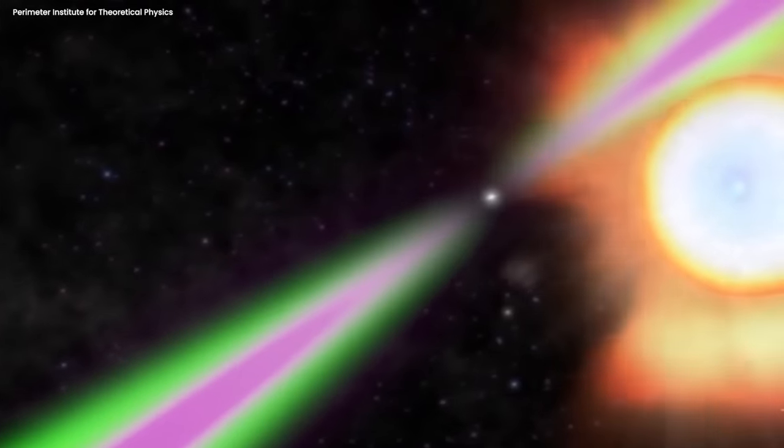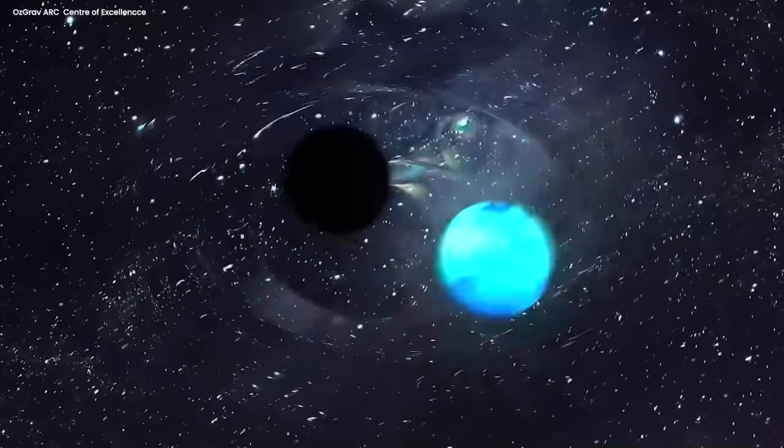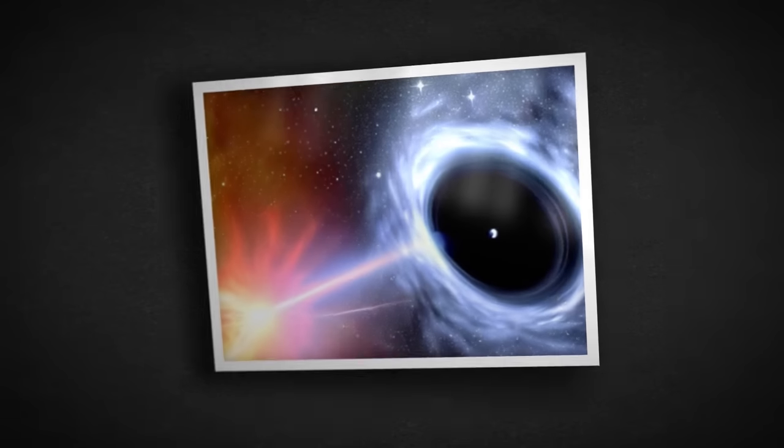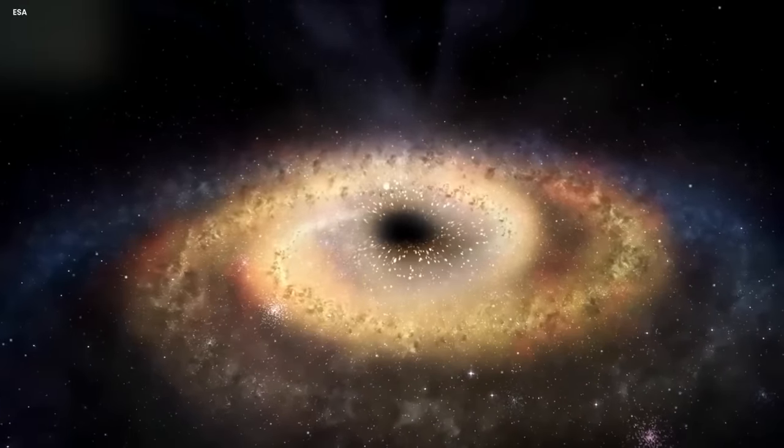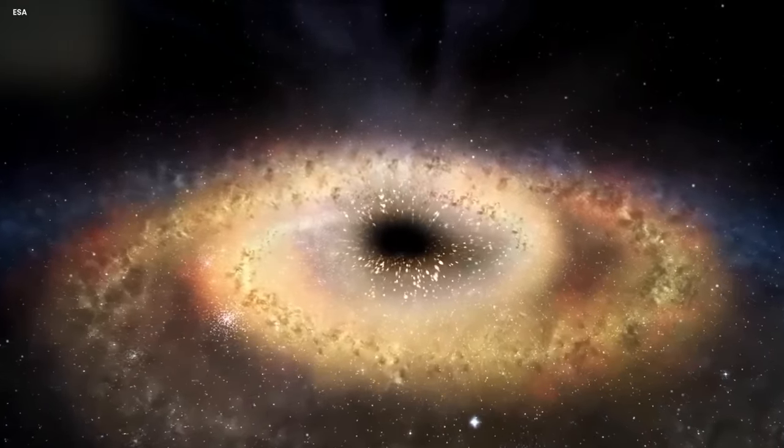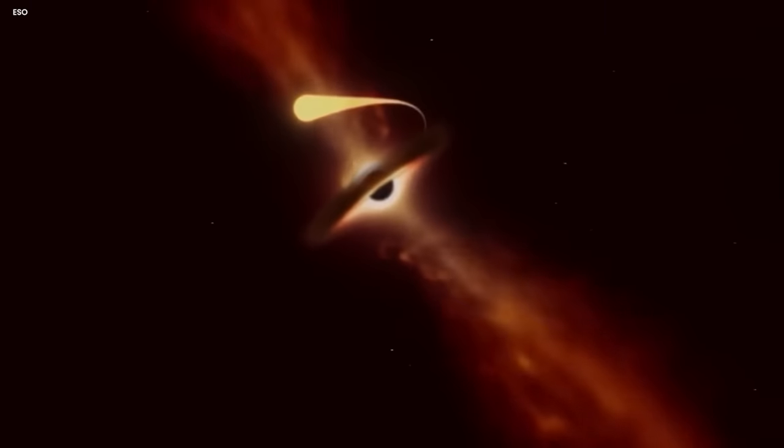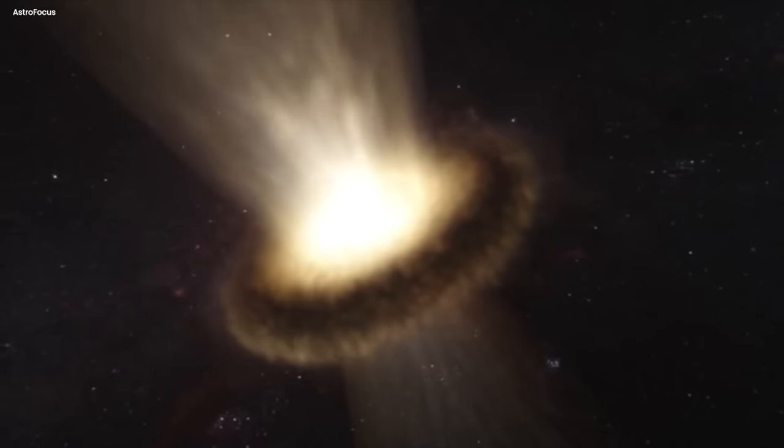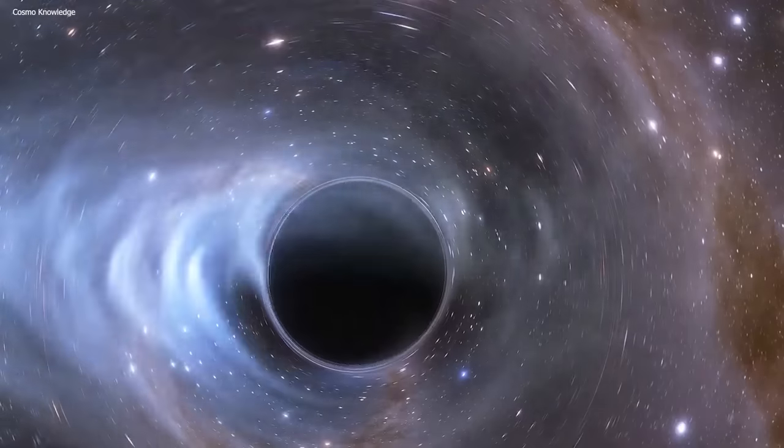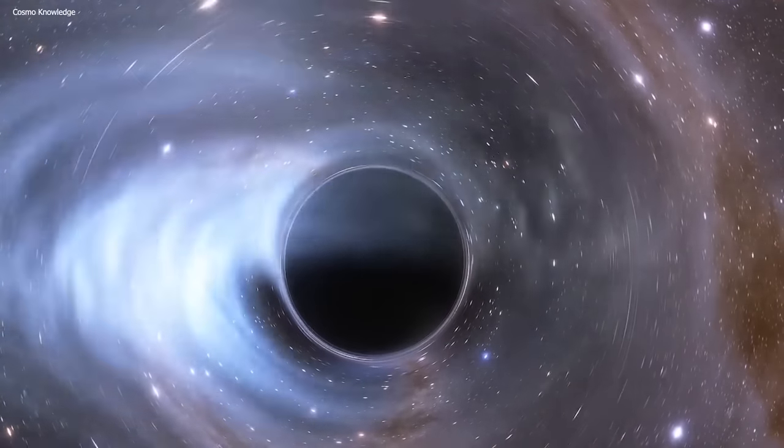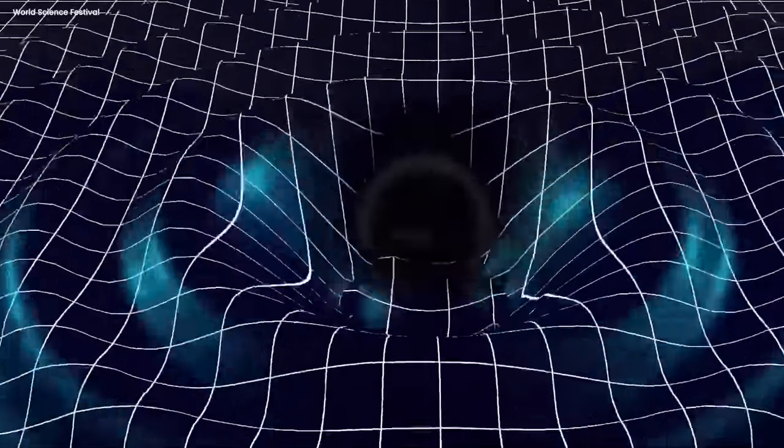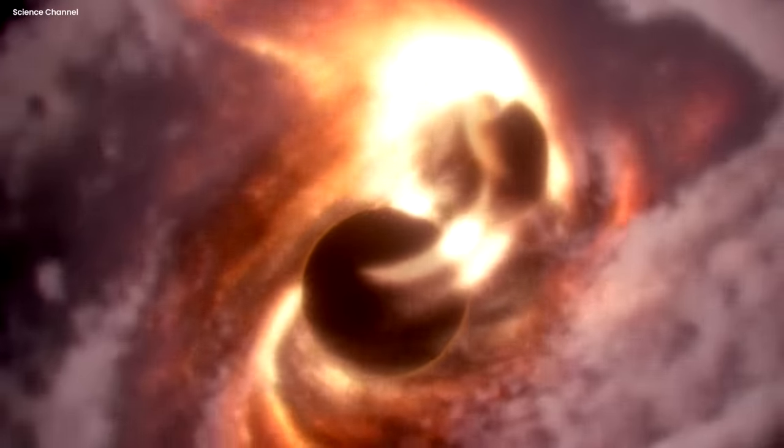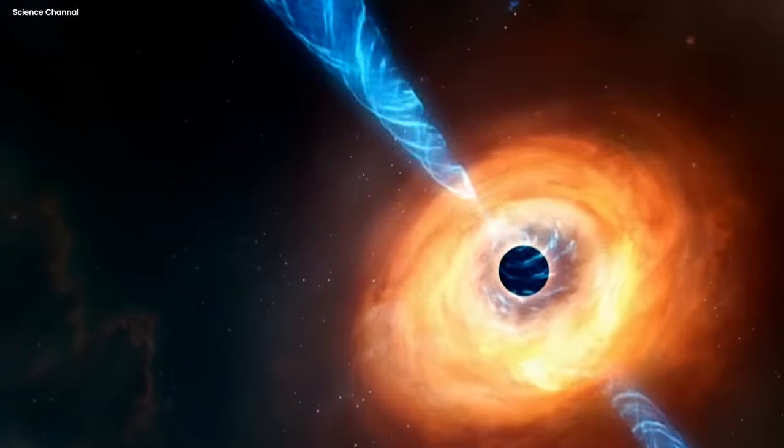As the star collapses, it becomes incredibly compact, cramming a significant amount of mass into an extraordinarily small volume. Consequently, stellar black holes typically possess a mass ranging from just a few times to around 20 times that of our sun. What's truly remarkable is their minuscule size despite their considerable mass. Their diameter measures only a few kilometers, highlighting their extreme density. This tremendous density gives rise to the formation of an event horizon, a boundary beyond which nothing, not even light, can escape. This event horizon serves as the point of no return, where the gravitational pull becomes so overpowering that any object or information crossing it becomes forever trapped within the black hole's grasp.